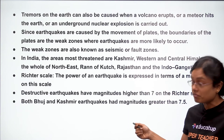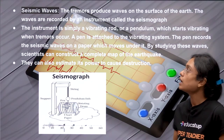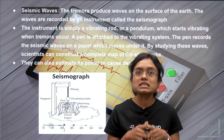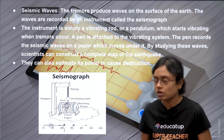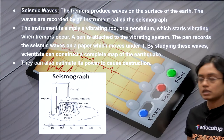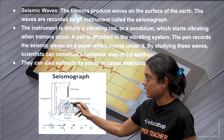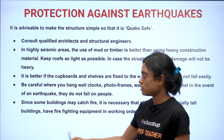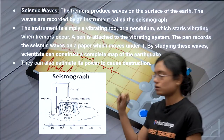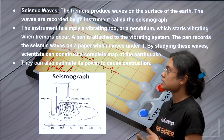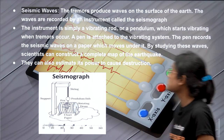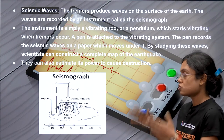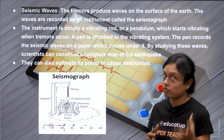Seismic waves are waves produced on the surface of the earth by tremors or earthquakes. These waves are recorded by an instrument called a seismograph, which is essentially a vibrating device with a paper and pen. When it starts vibrating, its pendulum causes the pen to draw a design, and through that, scientists can construct a complete map of the earthquake — its level, nature, and expected destruction. The seismograph is very helpful in estimating the power of destruction.